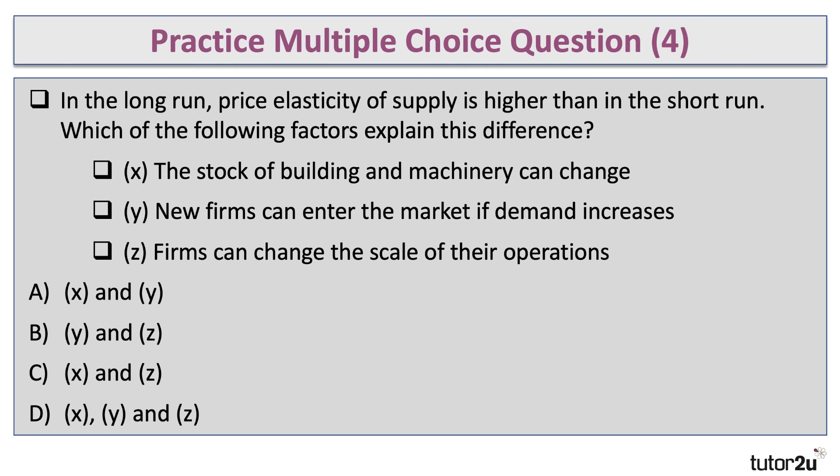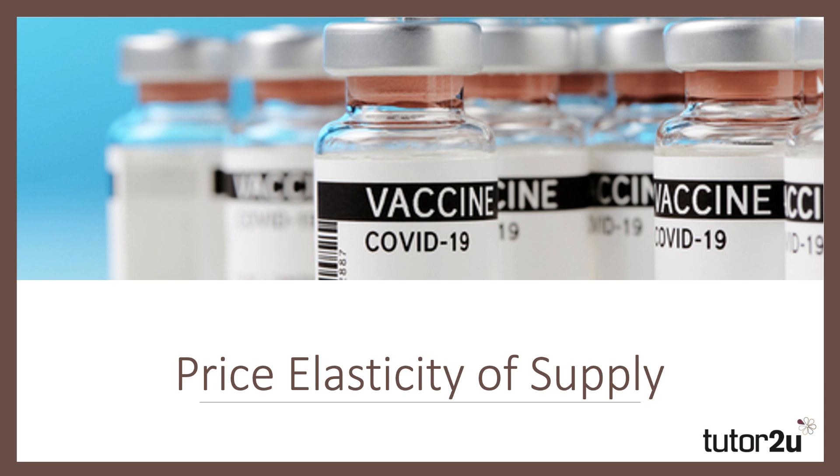Last question: in the long run, price elasticity of supply is higher than in the short run. Which of the following factors X, Y, and Z explain this difference? Is it that the stock of buildings and machinery can change? Yes. Is it that new firms can enter the market when demand increases? Yes. Is it that firms can change the scale of their operations? Yes. So the right answer is D — all three factors explain why long-run supply tends to be more price elastic than in the short run.